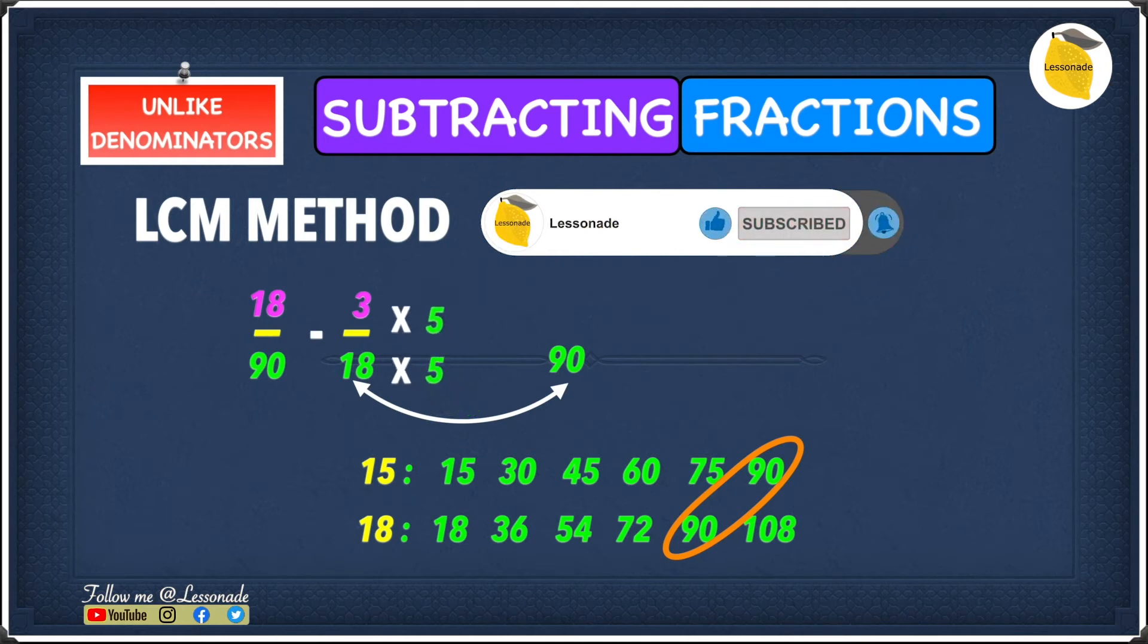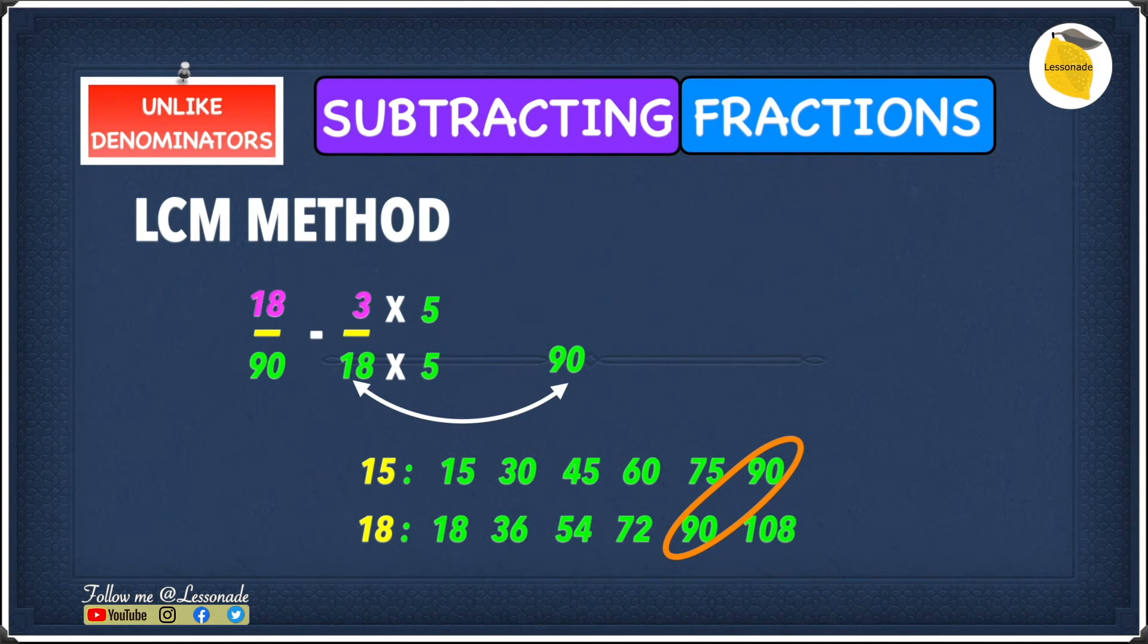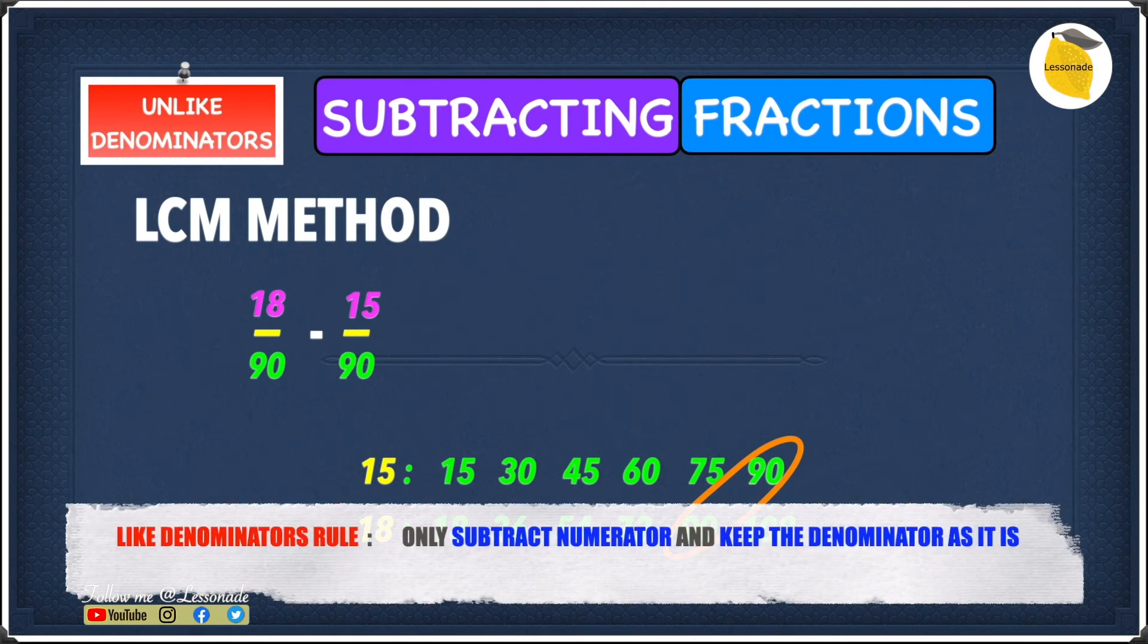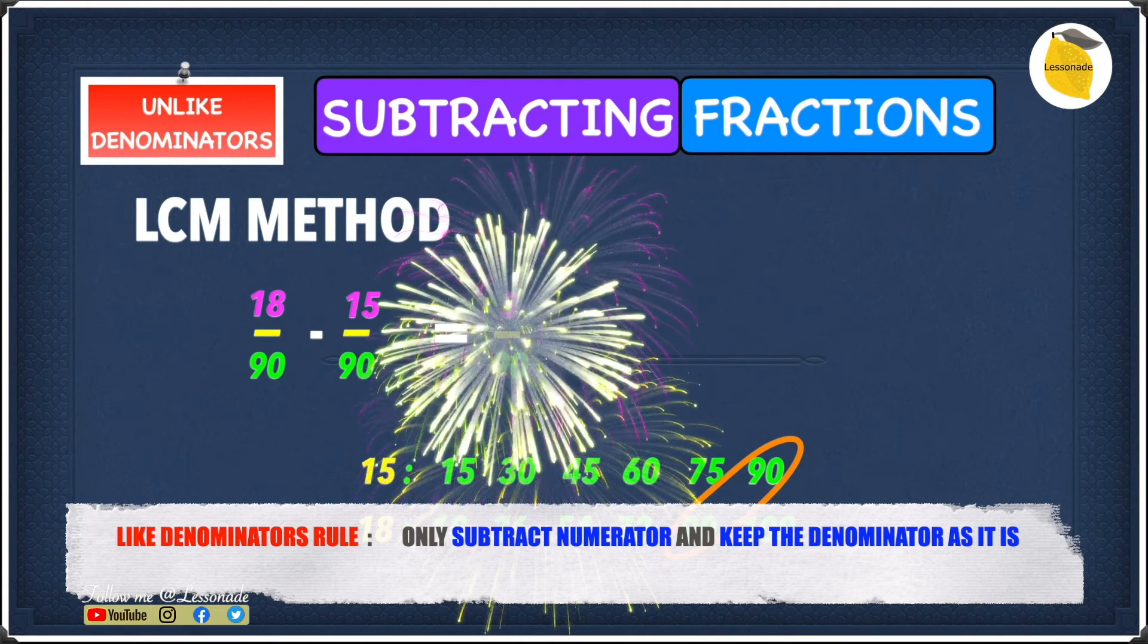Because we are multiplying the bottom number by 5, we're going to multiply the top number also by 5. So we get 3 times 5 and 18 times 5. 3 times 5 is 15 and 18 times 5 is 90, so we get 15 over 90. Now we have 18 over 90 minus 15 which will give you 3 over 90.